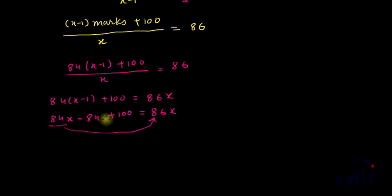Then this will become 100 minus 84 is 16, and this will be 86X minus 84X. Or 86X minus 84X is 2X is equal to 16. Or you can see X is equal to 8.